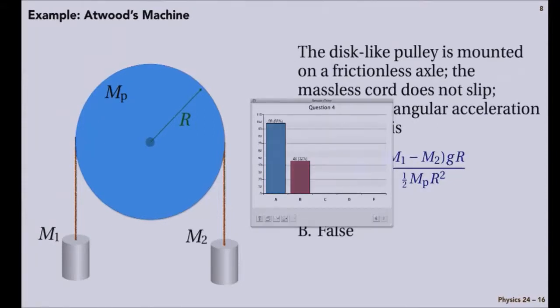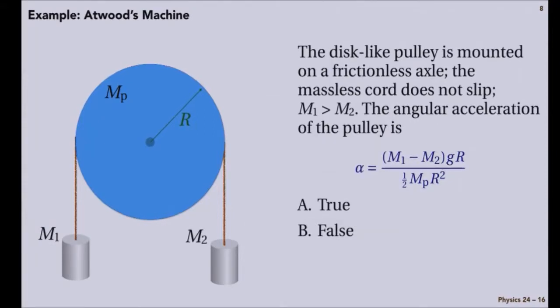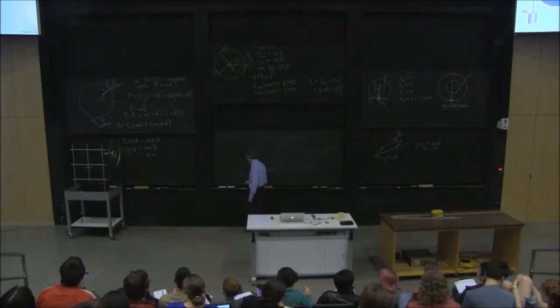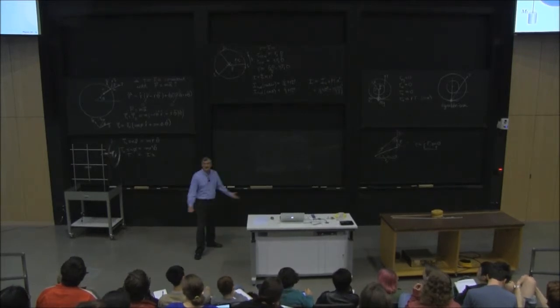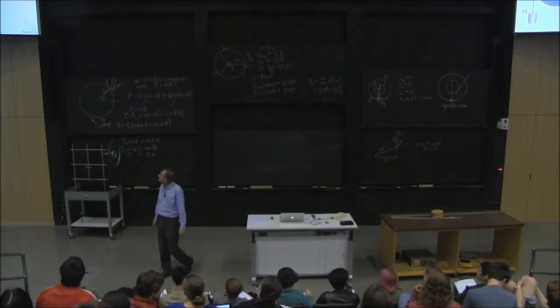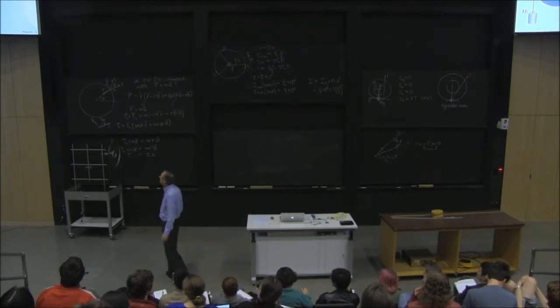About two-thirds of you say sure, because the top is the gravitational torque and the bottom is the moment of inertia. So let's see if that works out to be correct. How many different isolation diagrams am I going to need for this? Three, all right.